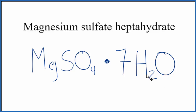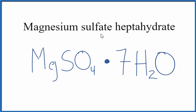So that's the formula for magnesium sulfate heptahydrate. If we heat this up, we can make the seven water molecules leave, and that would just give us MgSO4, magnesium sulfate. Sometimes they'll call that anhydrous magnesium sulfate because there's no water molecules around it. But this is the formula for magnesium sulfate heptahydrate. And this is Dr. B.